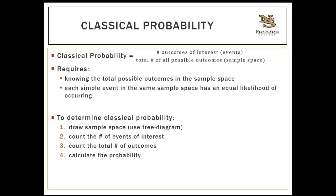Classical probability requires knowing the total number of possible outcomes in the sample space, which includes every possible event and is collectively exhaustive. For example, the events of rolling a six-sided die and getting a one, two, three, four, five, or six are collectively exhaustive, because when you roll a single die, one of those outcomes is going to occur.